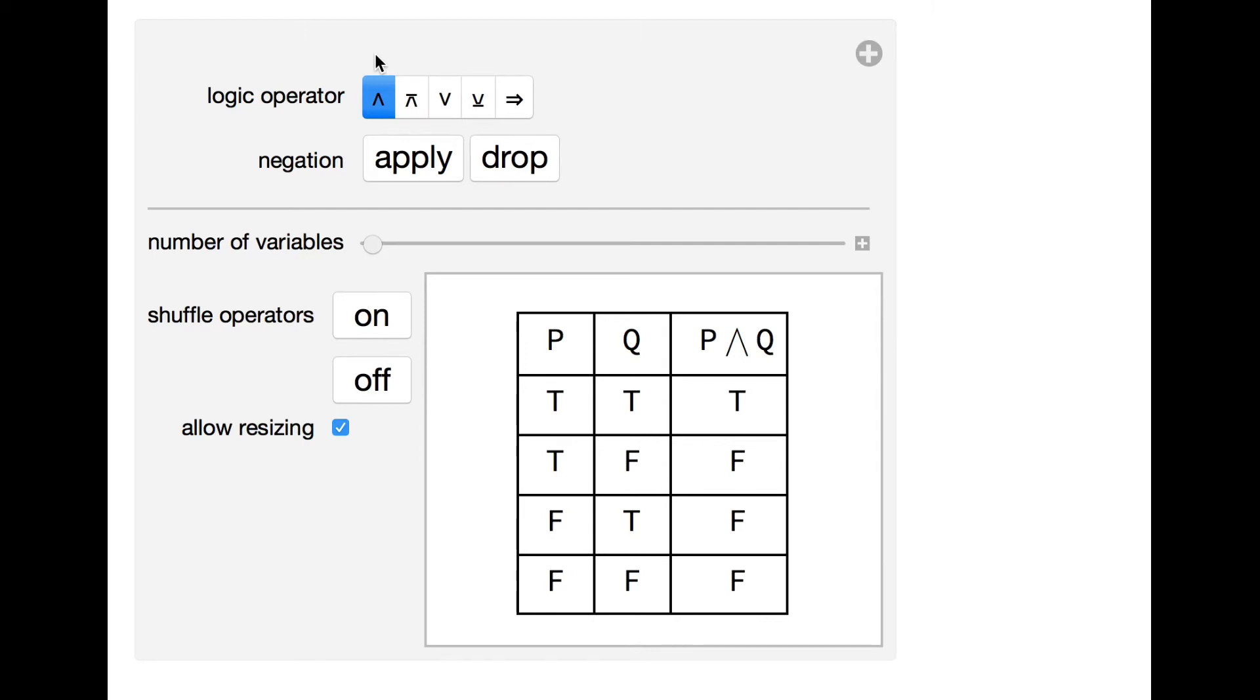The connective AND is called a Boolean operator and assigns a value for two propositions telling whether they can be true or false together. For example, for the operator AND, only when the two propositions P and Q are true, the final formula can be true.